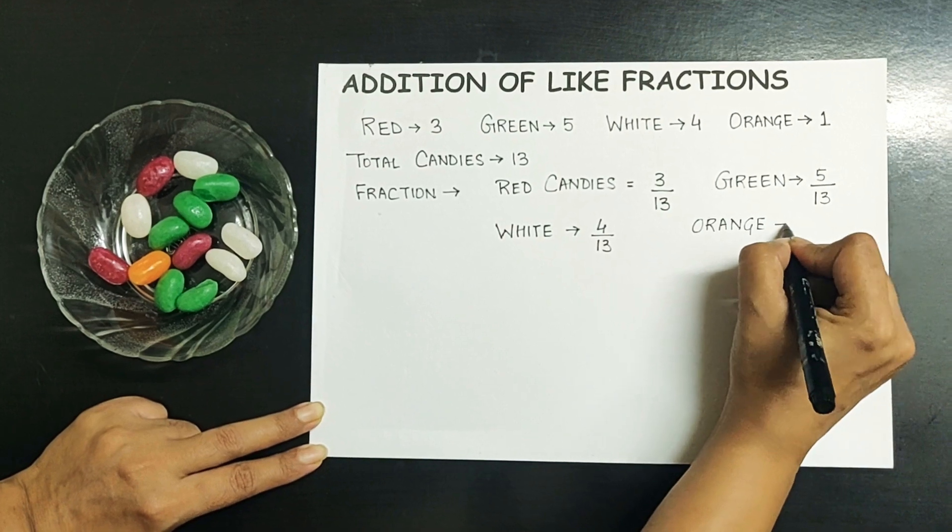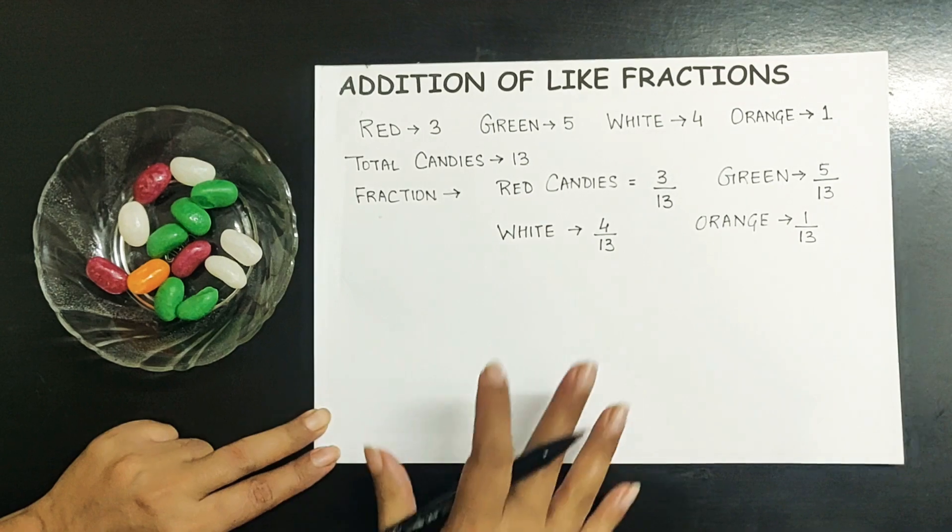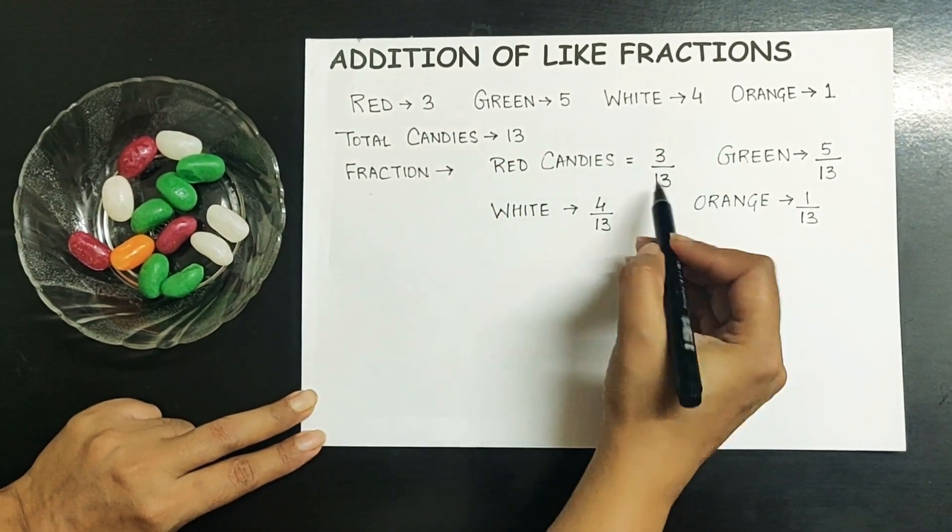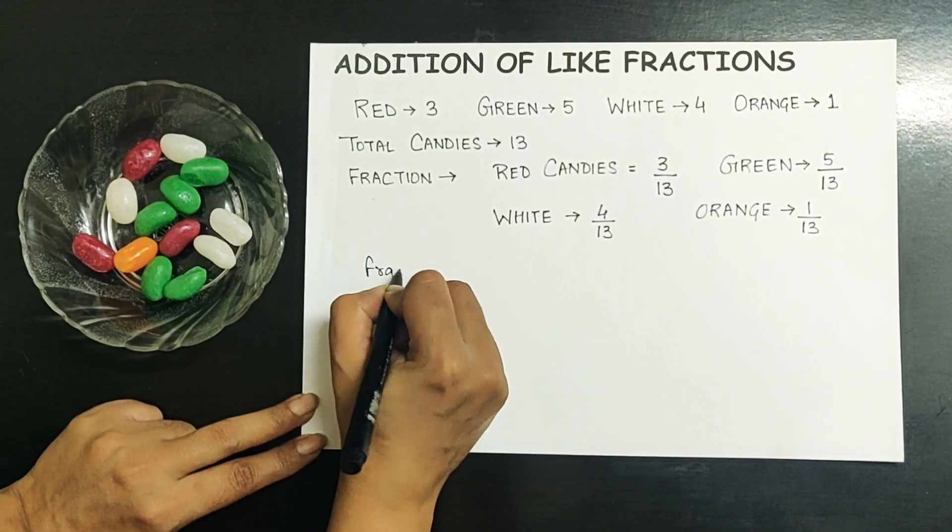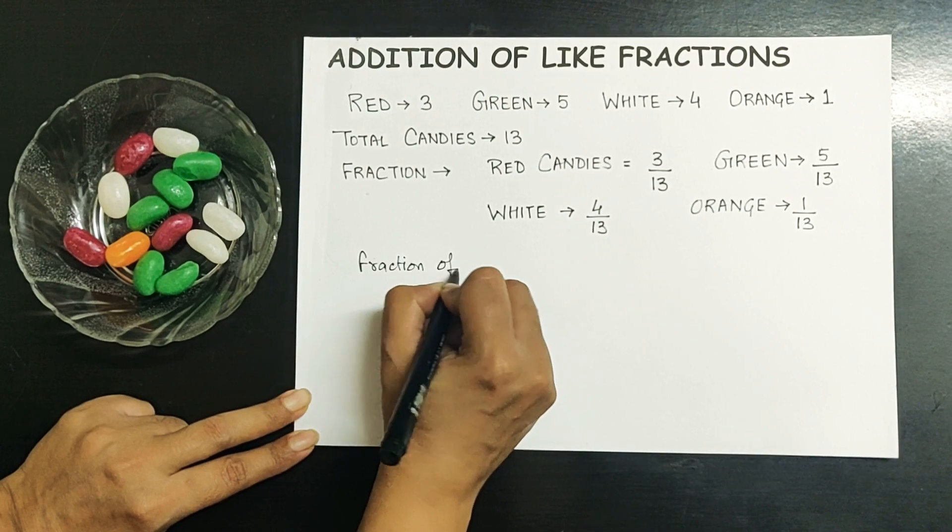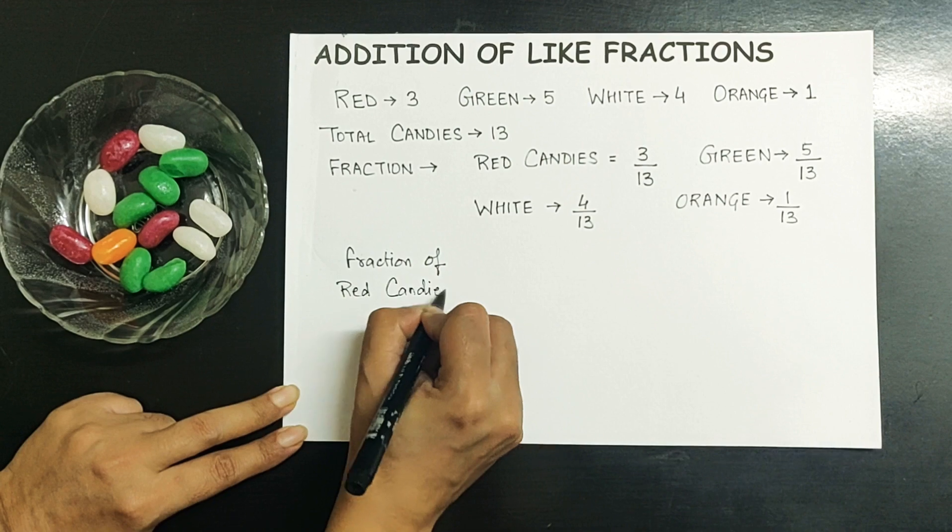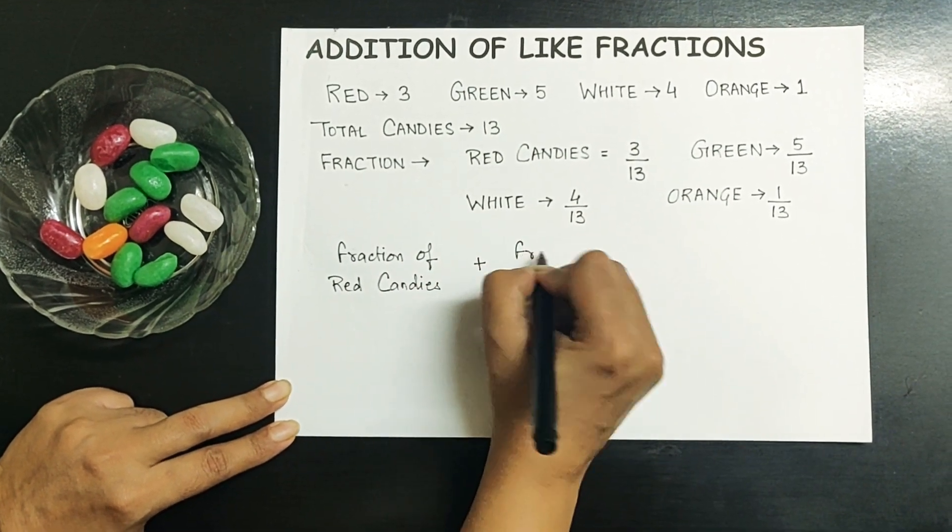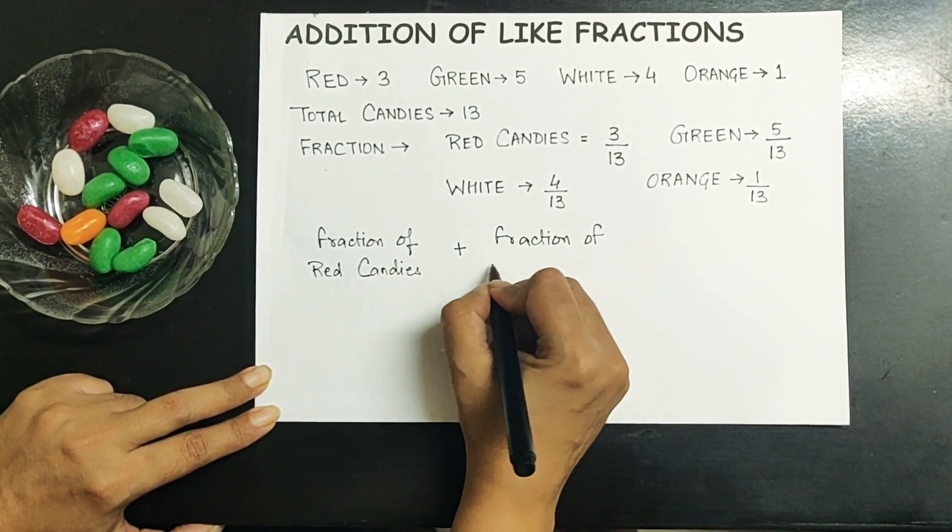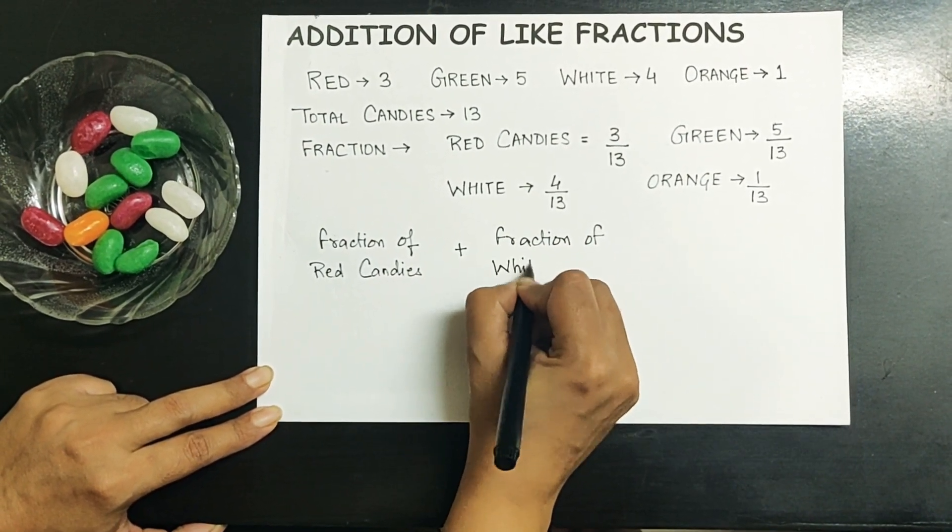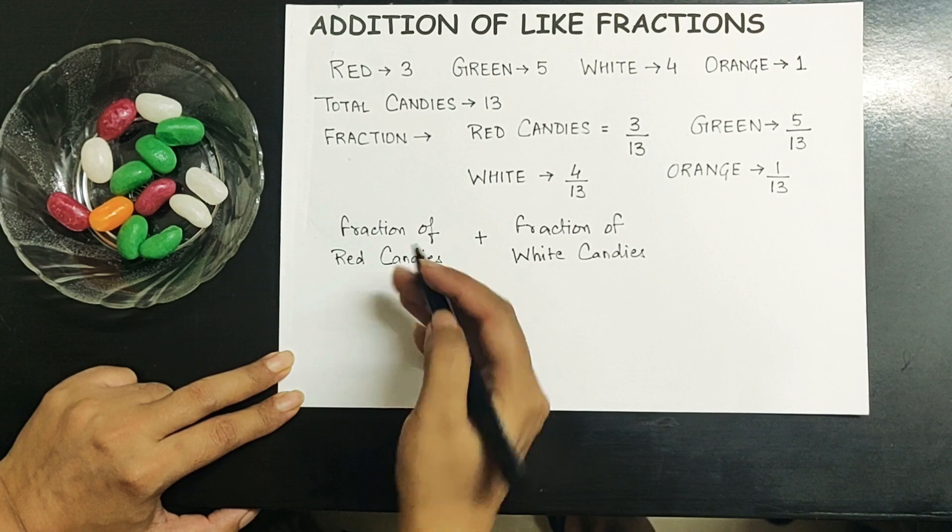Now we'll understand the concept of how we can add like fractions. Let us try to find out what is the fraction of red candies plus the fraction of white candies.